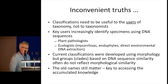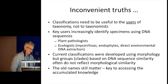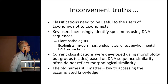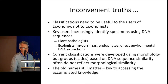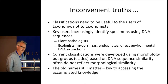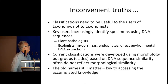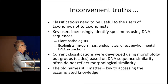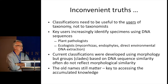Now I've got a couple of slides of what I've called inconvenient truths. The first one, I think, is absolutely key, and a couple of people have already hinted at this this morning: classifications need to be useful to the users of taxonomy, not to taxonomists.